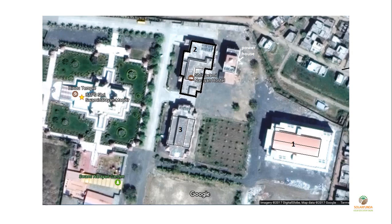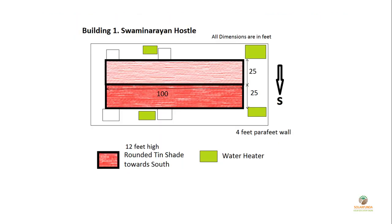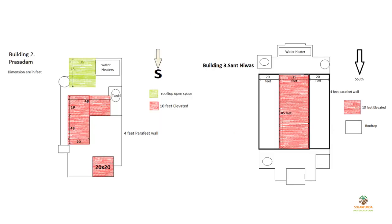This is Swami Narayan temple in Nagpur. We have three buildings: building 1, 2, and 3. Building 1 is the Swami Narayan hostel, having a 100 by 25 feet slope facing south, shown in dark red — very useful for placing panels. In building 2, called Prasadam, the red-colored areas are where we can place panels; these areas are elevated so there's no shadow issue. The third building is Sant Nivas, with an 85 by 25 feet open elevated area for panels. Google Maps helps most by providing the top view of the buildings.